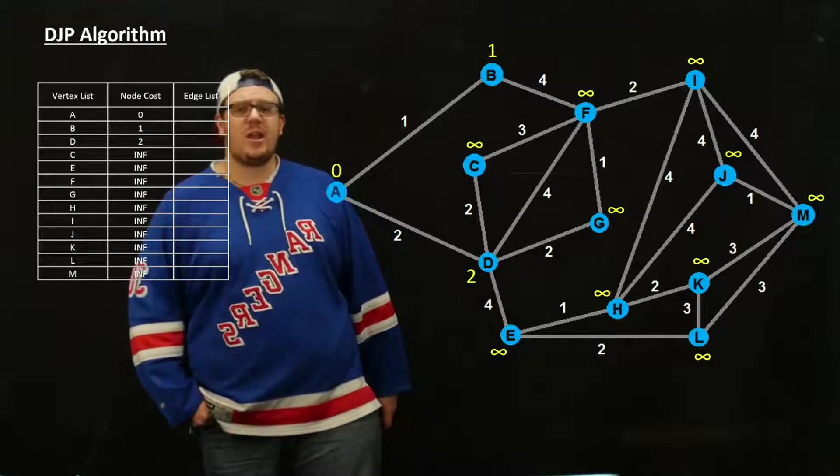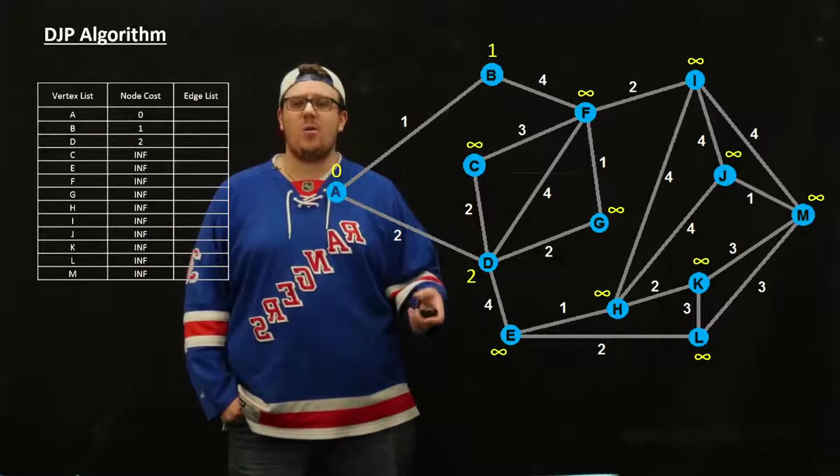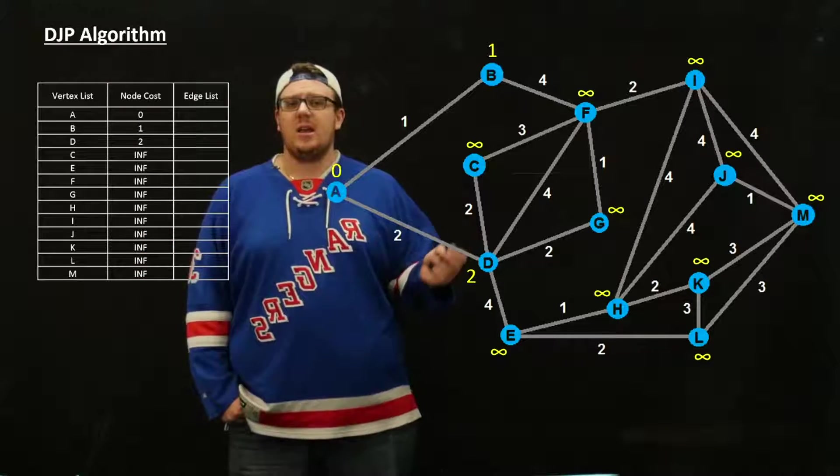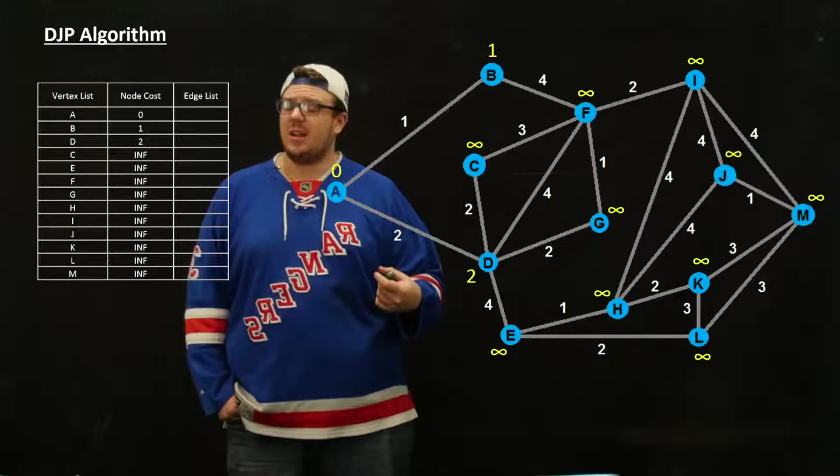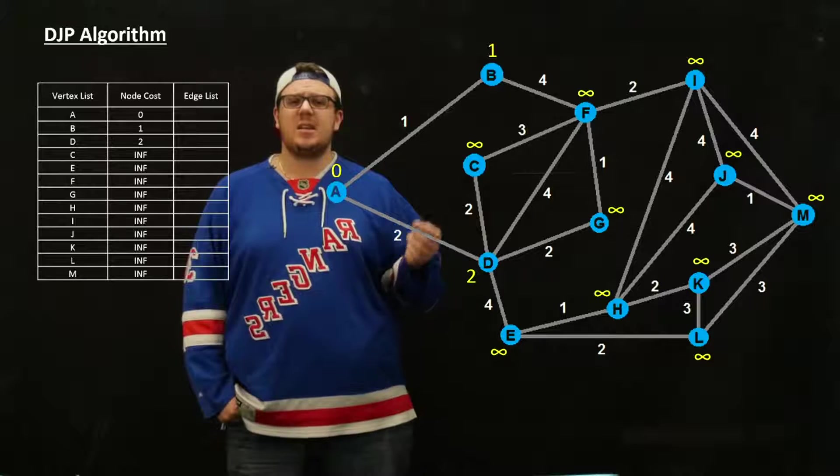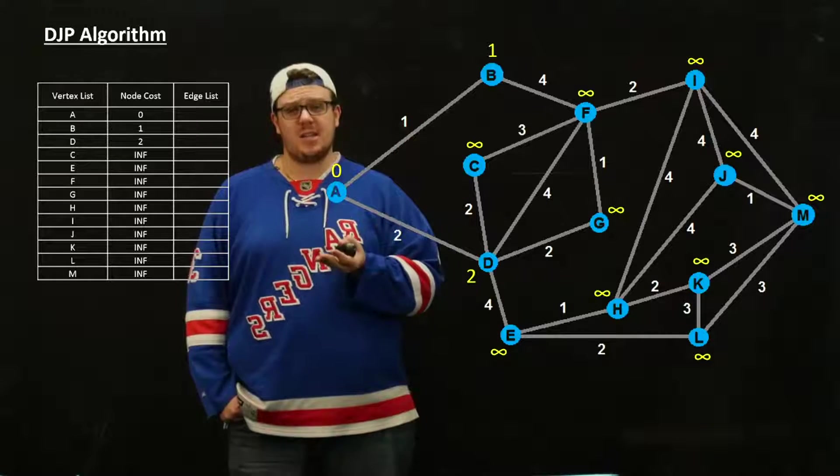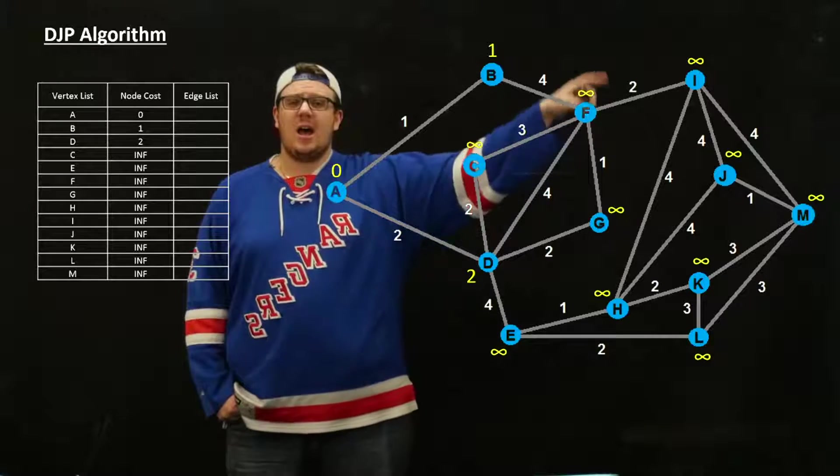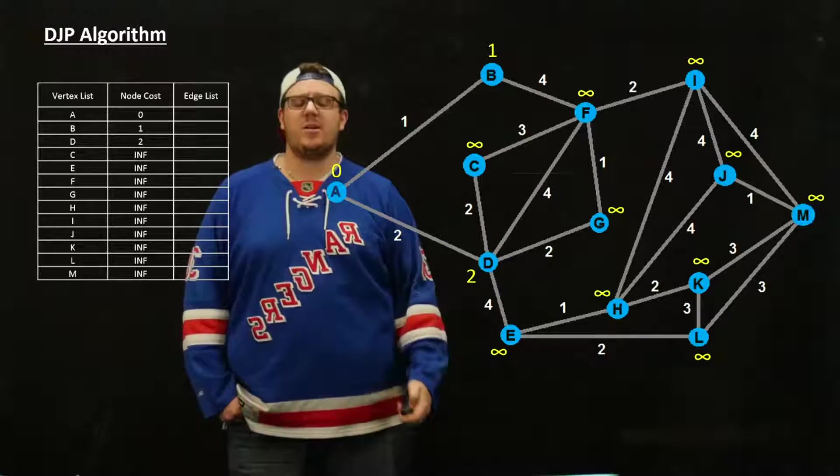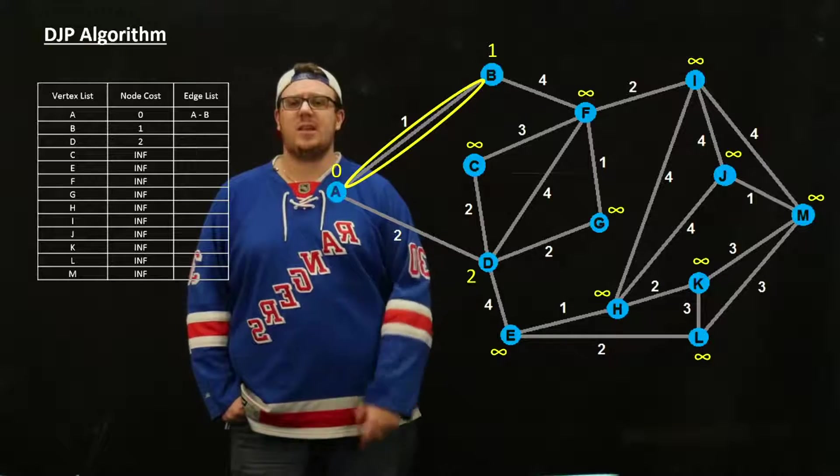From here on, we find the node that isn't in the tree that is the closest to something that is in the tree. In this case, the thing that is closest and non-zero, because zero indicates that it is in the tree already, is 1. So we add the edge AB to the list.